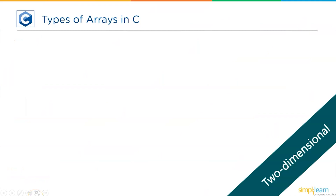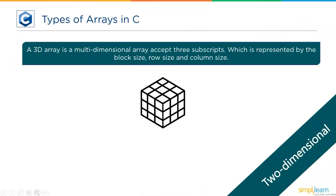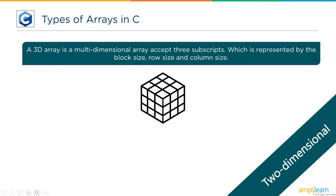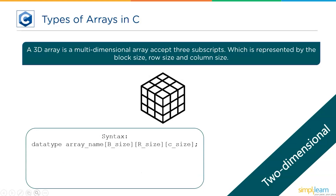Up next, we have a 3-dimensional array. A 3D array is a multi-dimensional array that accepts 3 subscripts, represented by block size, row size, and column size — a cube is an example of a 3D array. The syntax is: data type, array name, followed by 3 subscripts. The first subscript represents the number of blocks, the second is the number of rows, and the third represents the number of columns. For example: int a[2][3][4] — block size 2, row size 3, column size 4.